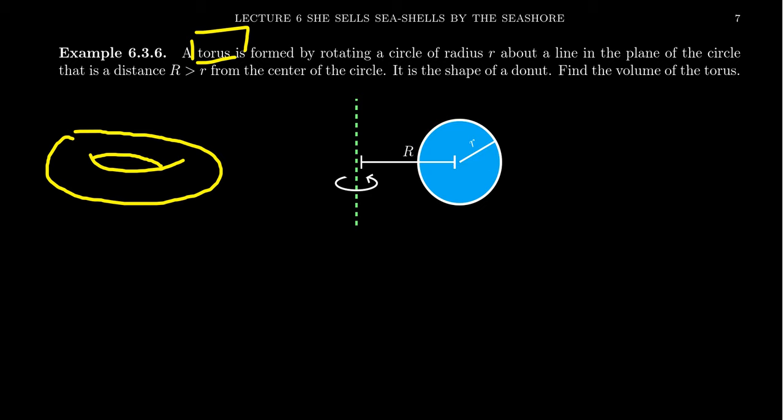The theorem of Pappas offers a very simple alternative to this. Let's start off with the area of the circle. The area of the circle, A, would equal pi r squared. That's a little r because little r gives you the radius of the circle. And then if you look at the center of the circle, how far does that travel in this journey?